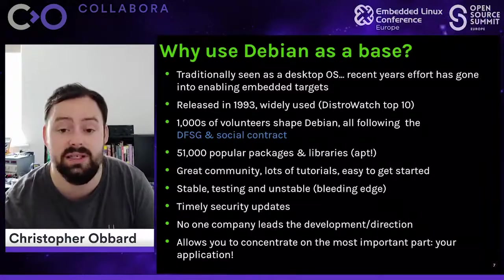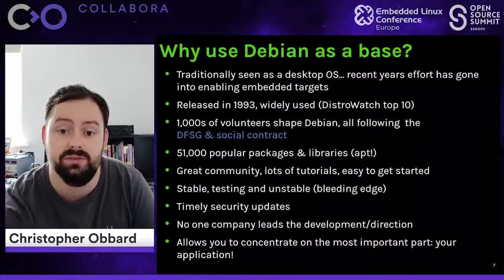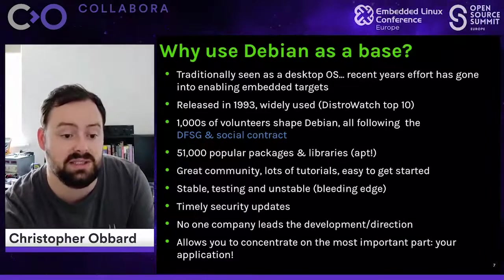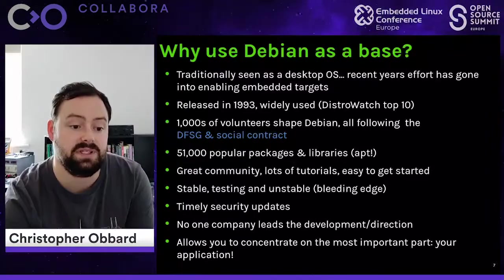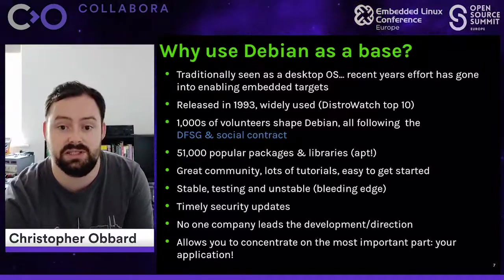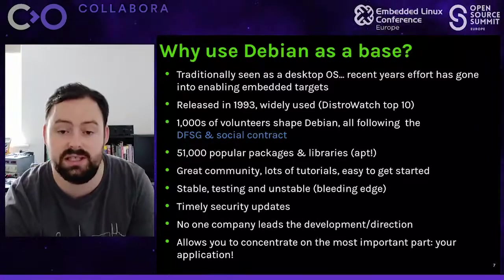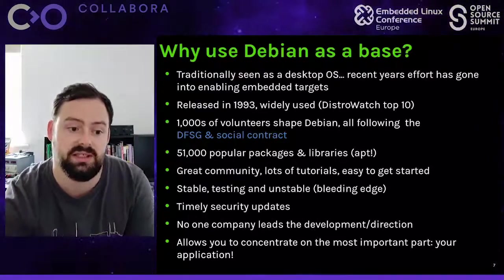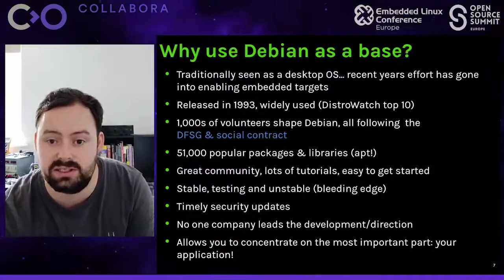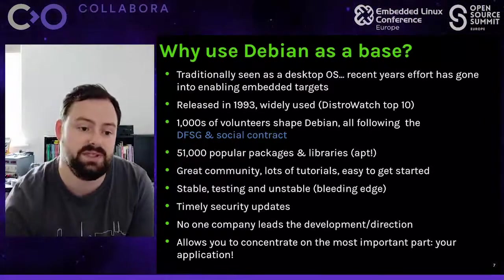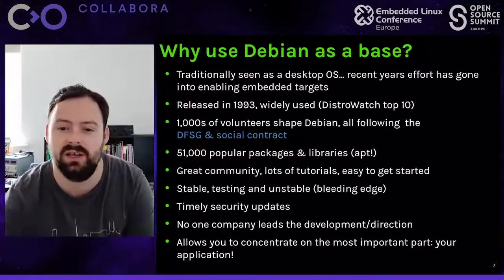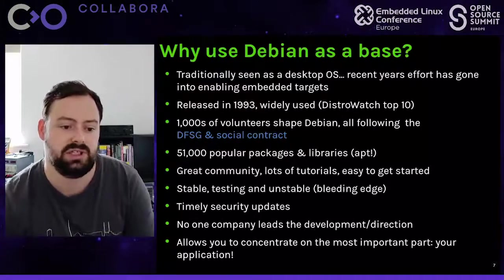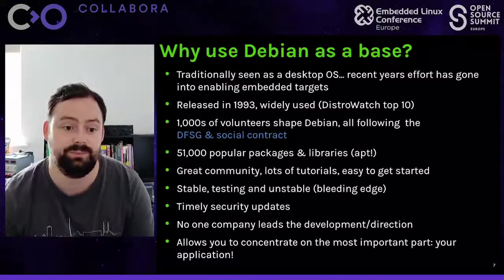There are at least three branches of Debian: Stable, Testing, and Unstable. Stable is currently known as Buster, Testing is known as Bullseye, and Unstable is always known as SID. Stable and Testing are like symbolic links to these official names, so if you stay on the Stable branch you'll always update to the latest Stable.